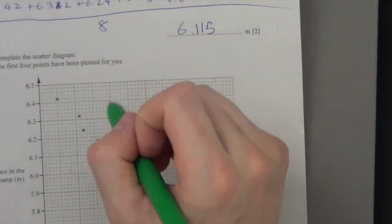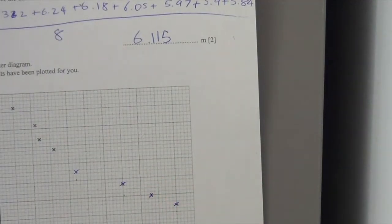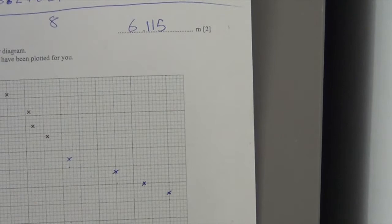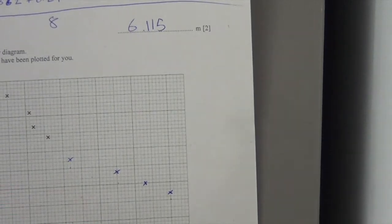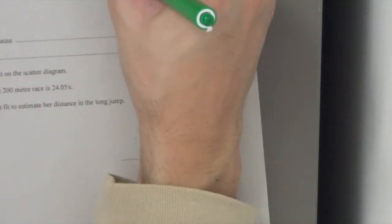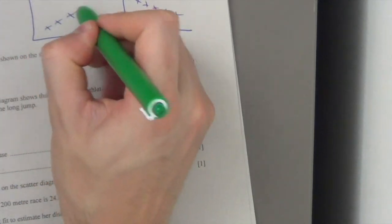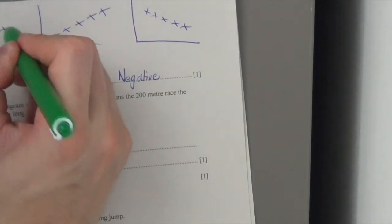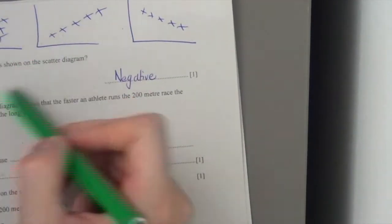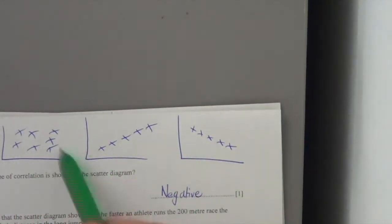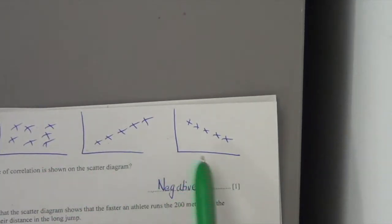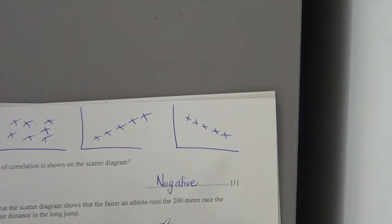Complete the scatter diagram — points already plotted for you — which gets you two marks if plotted correctly. Pause the video to make sure you're comfortable plotting those points. Next question: what type of correlation is shown in the scatter diagram? It's a negative correlation. If you've got points going downward like that, that's negative. If you've got points going upward like this, that's positive. If you've got points all over the place, that's no correlation.